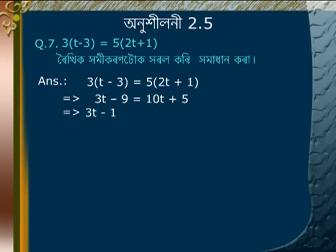Transposing: 3t minus 10t is equal to 5 plus 9, giving minus 7t is equal to 14. Dividing both sides by minus 7 gives t is equal to minus 2. That is the answer.